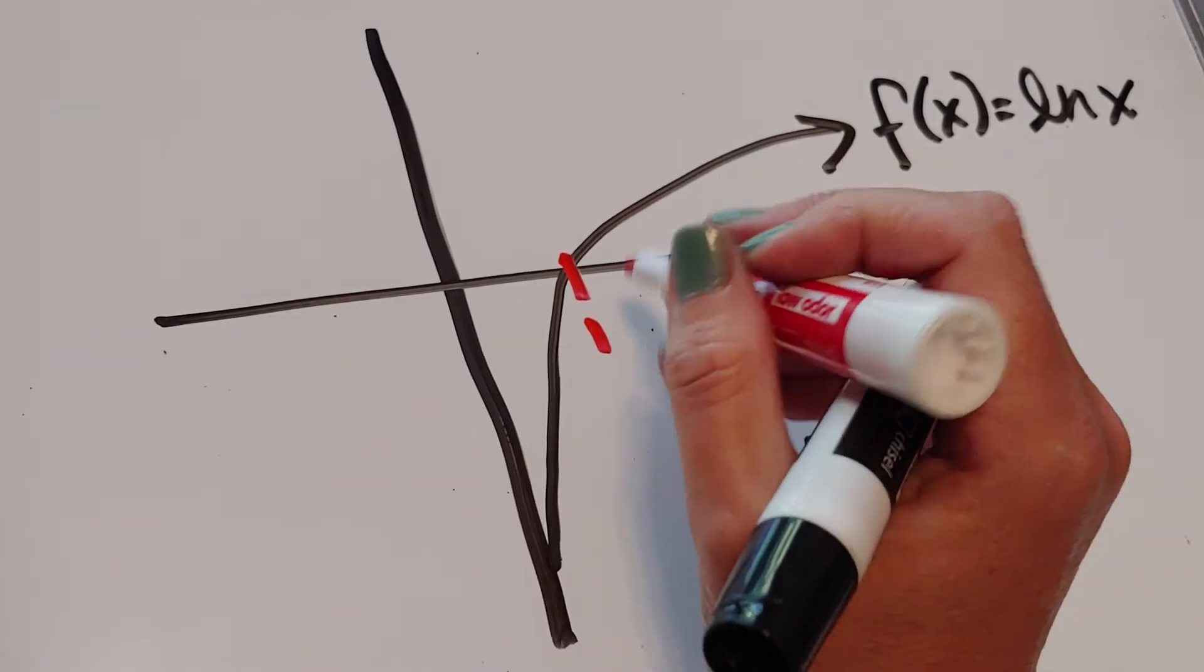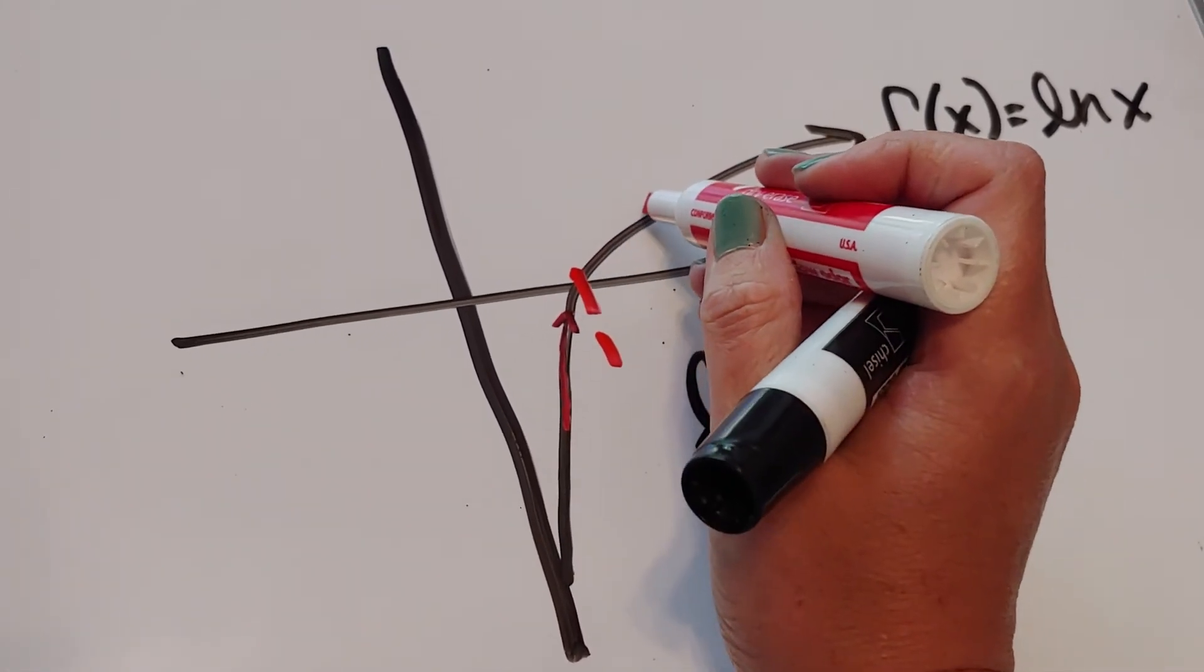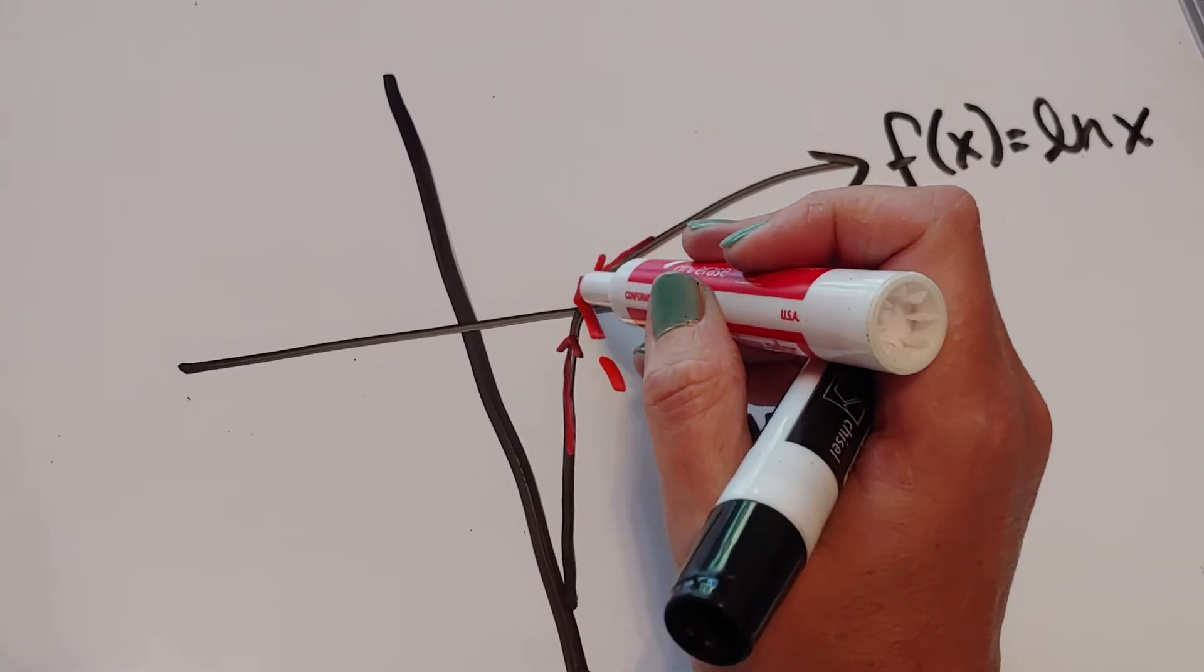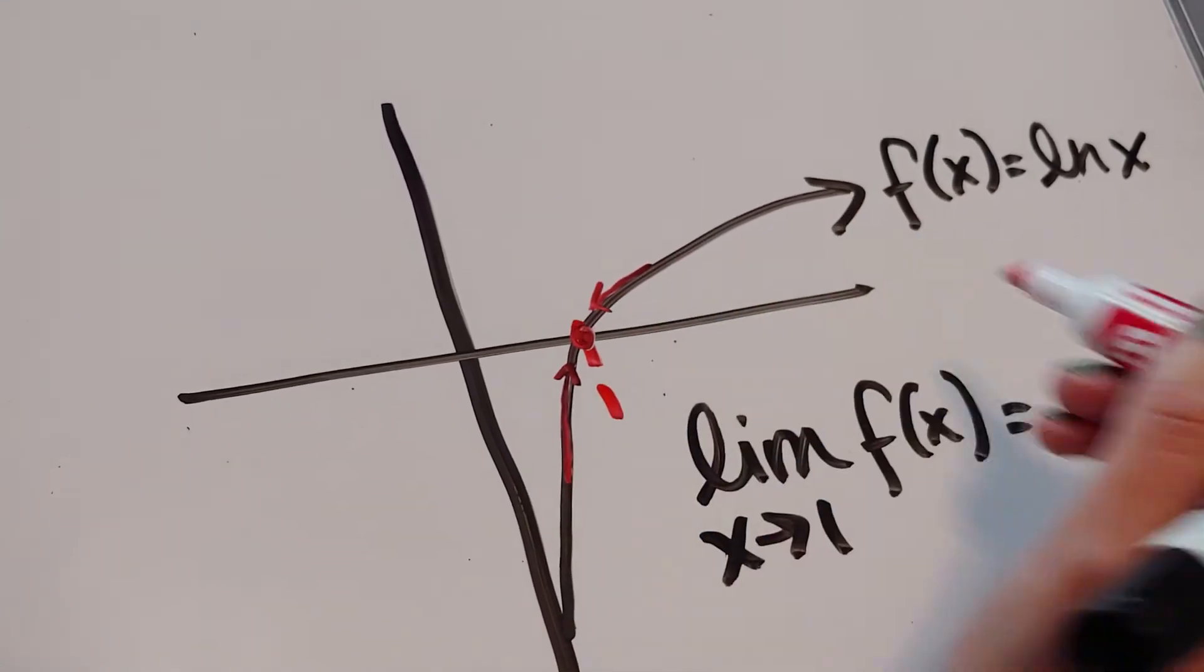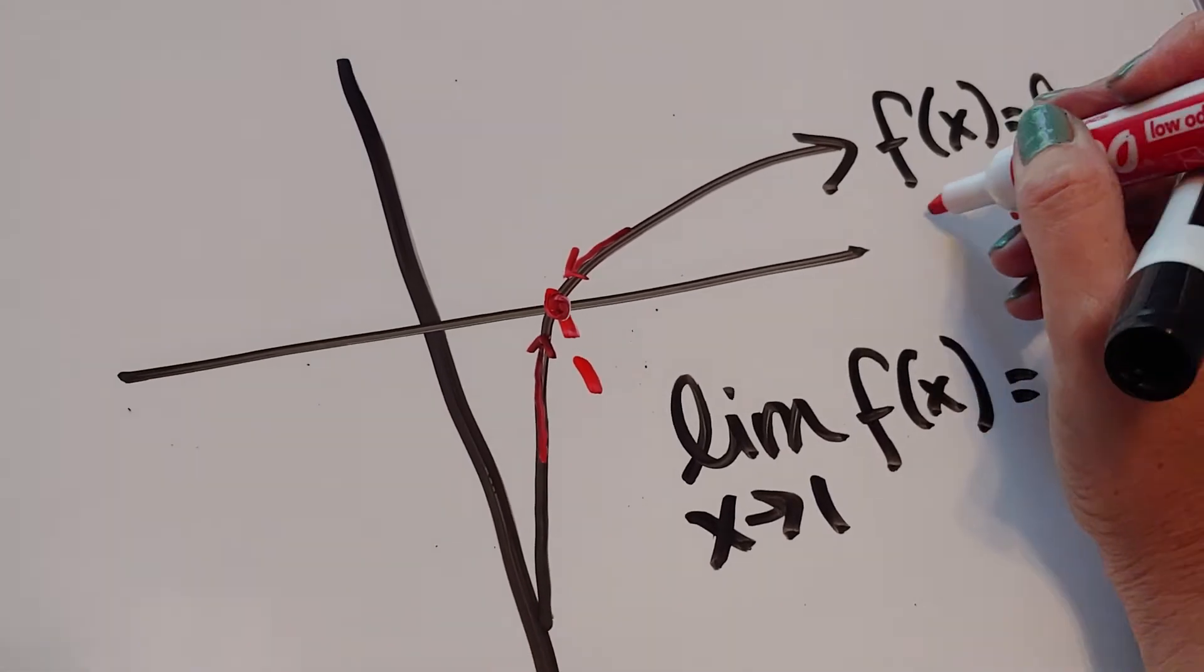Again, x is 1 is right here. So, as I am walking towards it from the left and walking towards it from the right, this graph is connected and exists there. So, I think I'm going to the y value of 0.